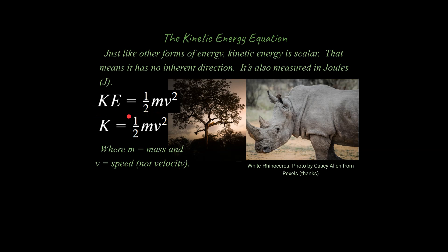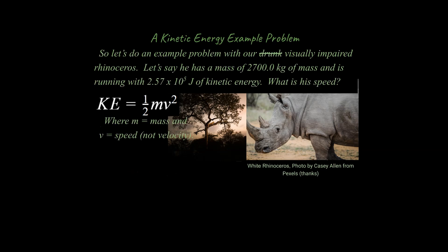This is the typical equation you're going to see in a physics class. This is the slightly modified version you would see on an AP equation sheet, where M equals mass and V equals speed — not velocity. So let's do a problem with our white rhino. Let's say the white rhino has this mass and this amount of kinetic energy — what is his speed?